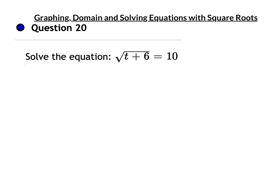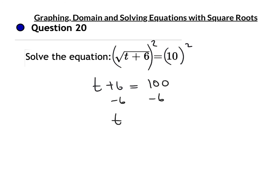Question 20: the square root is already by itself, so I can just square both sides. The square and the square root cancel out, leaving t plus 6 equals 10 squared, which is 100. Take 6 off each side, and t equals 94.